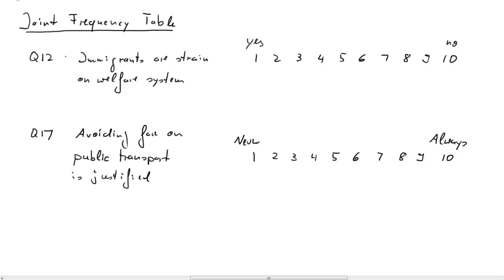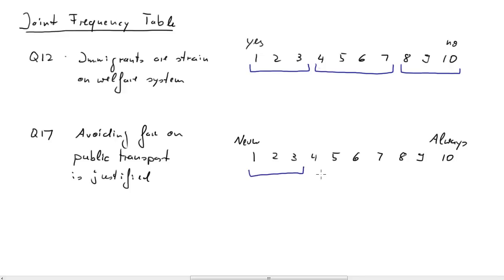Because we have a categorical answer with 10 responses, to make calculations a bit easier we are going to group responses together, and we do that for both questions. Answers 1 to 3, 4 to 7, and 8 to 10 for both questions — we are going to cluster them together and label them 1, 2 and 3 respectively. Those are the recategorized answers.